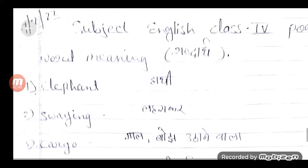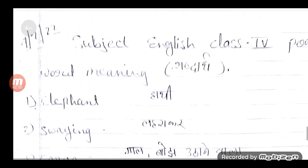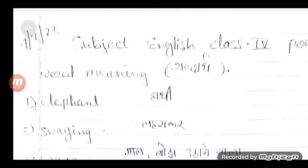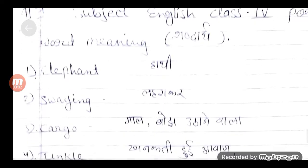अब हम इसके हिंदी वाले word meaning देखेंगे. इनको आपको new page से start करना है. Date, heading, CW अच्छे से mention करना है. आप देख सकते हैं, मैंने यहाँ पर heading लिखी है, और bracket में शब्दार्थ. First में देखिए: elephant.